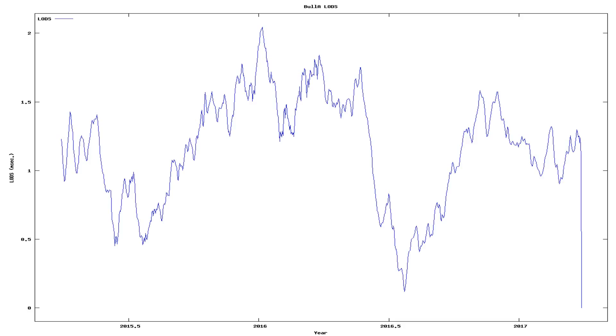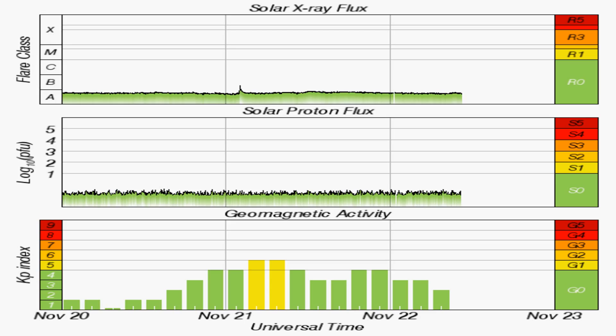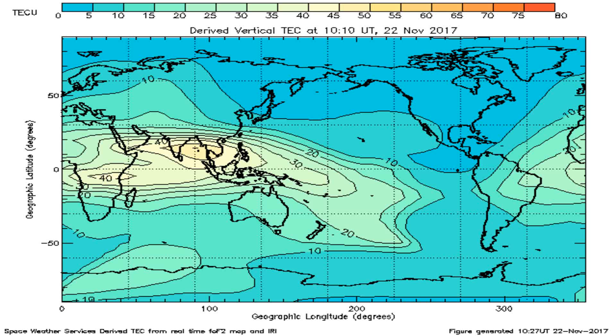And now we see changes in the speed of the rotation of the Earth, along with solar X-ray flux, solar proton flux, geomagnetic disturbances, and another graph of total electron content across the Earth.